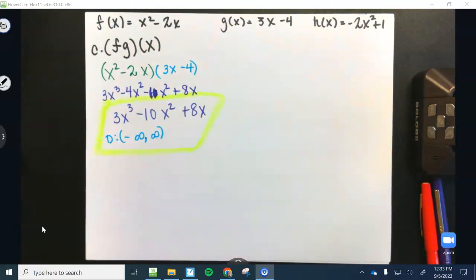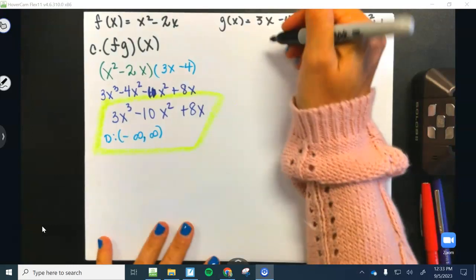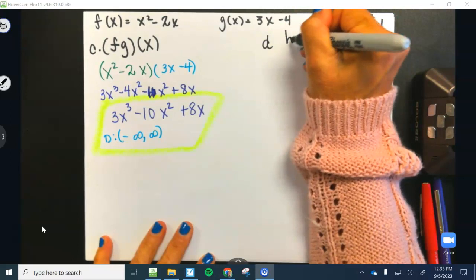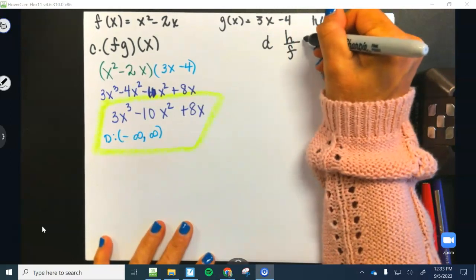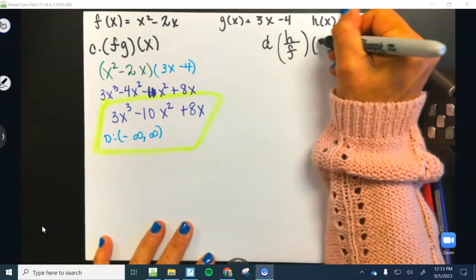Okay, so I did not write letter D. What does letter D say? H over which one? All right, here we go, guys. H over F. And we're going to leave this in terms of x.